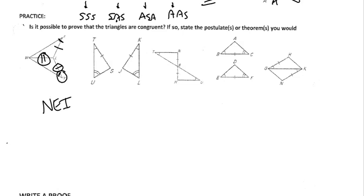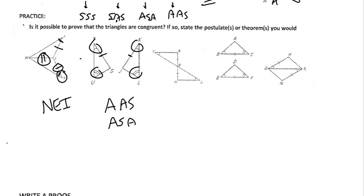This next one: angle congruent to angle, side congruent to side, and the vertical angles theorem — giving us another angle. Looking at the triangle, is the side included between the two angles? Included means it is bordered by those two angles. Is this side bordered by two angles? It's not. So that one would be AAS.